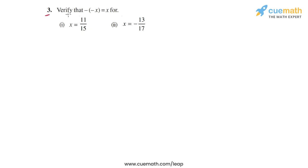In part 3, we have to verify that negative of negative x is equal to x for two rational numbers: x equal to 11 by 15, and x equal to minus 13 by 17. Let's take a few moments to understand what this equation means. Negative of negative x equals x — what does this mean?